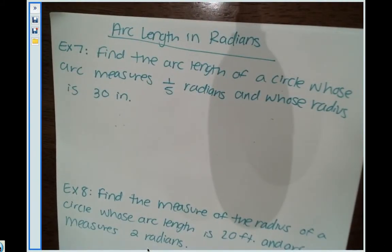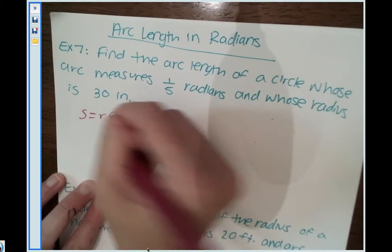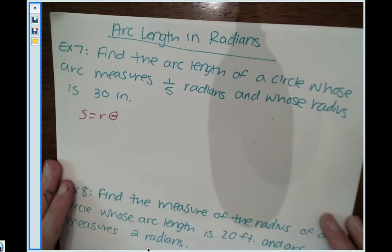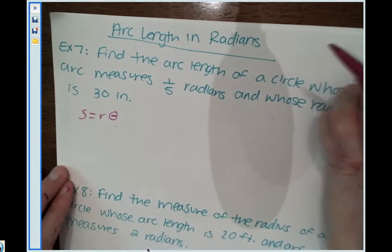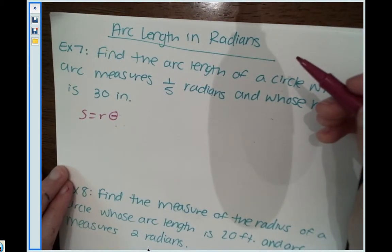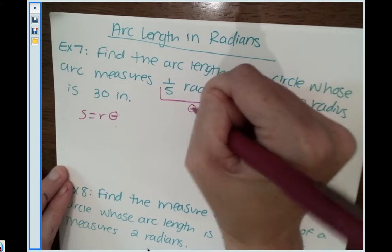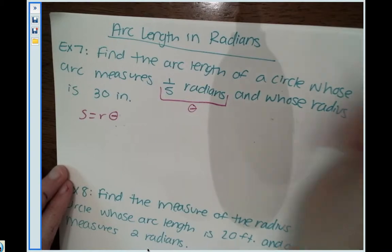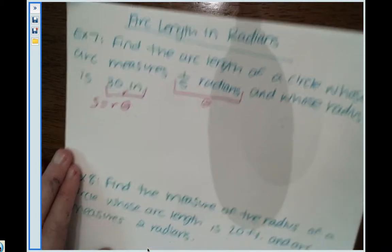I'm going to write down my formula: S equals R times theta. It says find the arc length of a circle whose arc measures one-fifth radians, which that's going to be our theta, and whose radius is 30 inches, so that's our R.